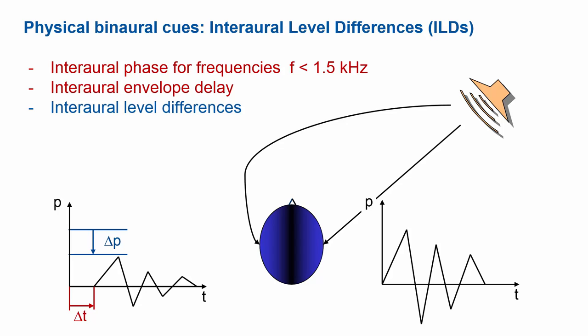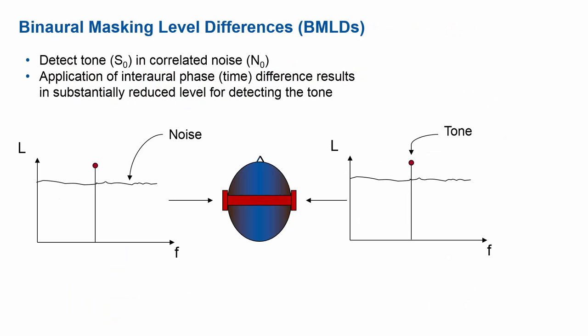Introducing those additional degrees of freedom — those additional cues — into masking experiments will make all the difference for explaining what's going on in the real world. So far we talked about a single tone in noise and measured masking patterns with one ear over headphones. But what happens if we bring the same signal to the other ear? Will it sound the same? What happens if we introduce a time difference, a level difference, or an uncorrelation into the signal?